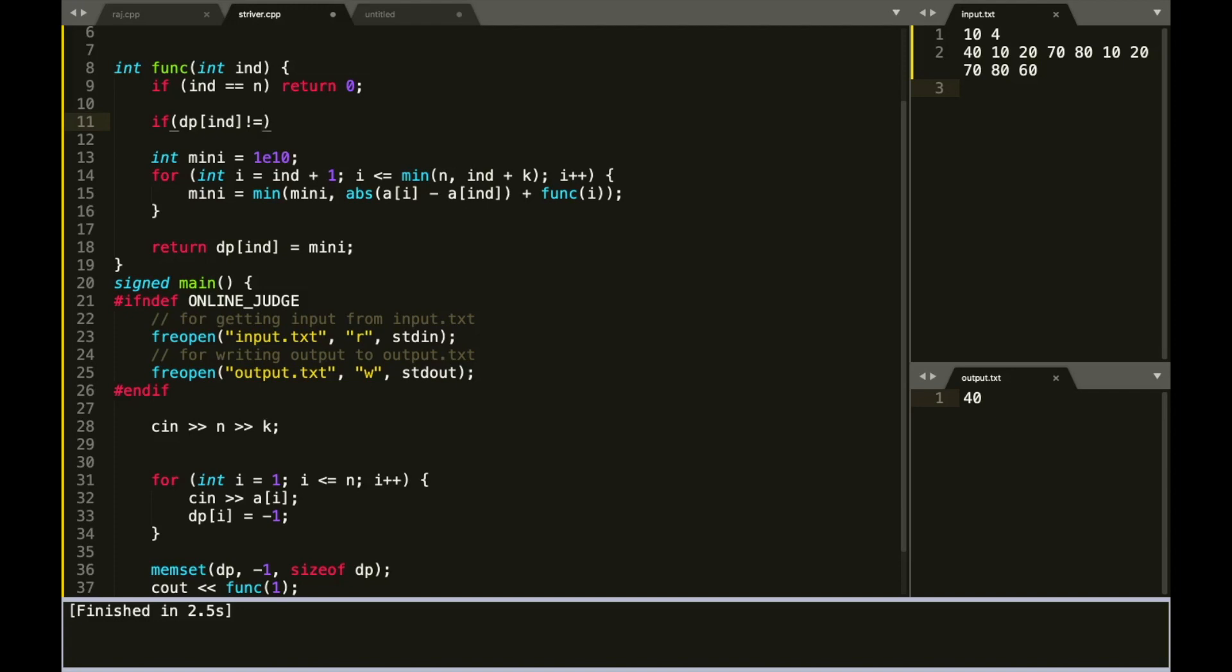That means if that index has been previously visited, then we must have stored some value over here. Hence, this dp[index] will not be minus 1 because initially we stored minus 1. So since the answer has already been stored, we do not need to compute this again. We can simply return the answer that is stored.